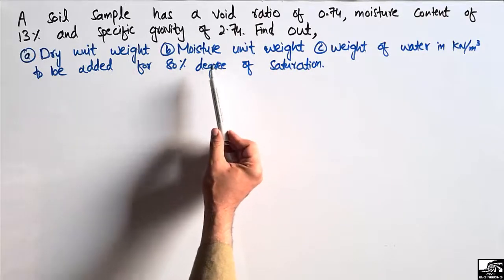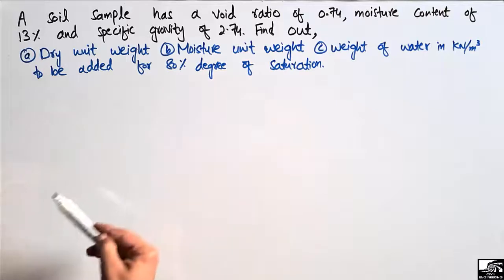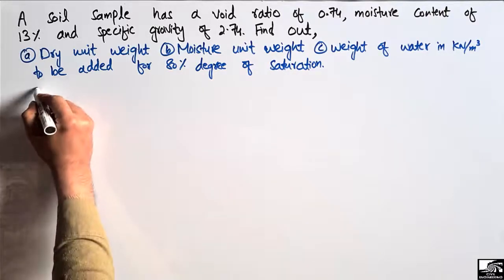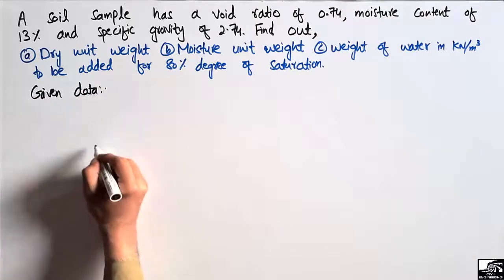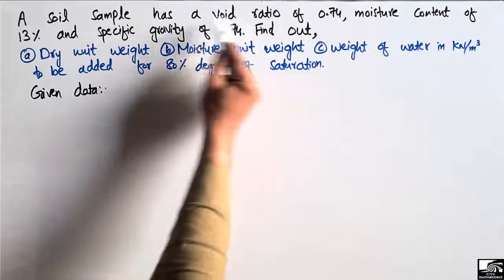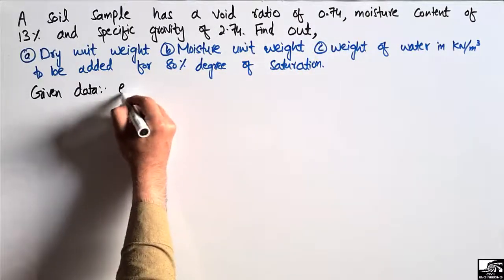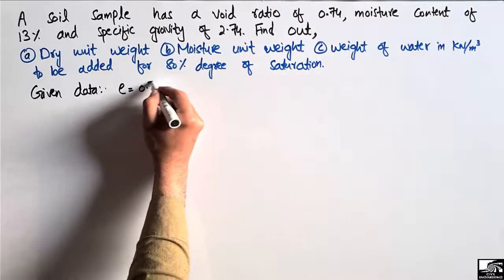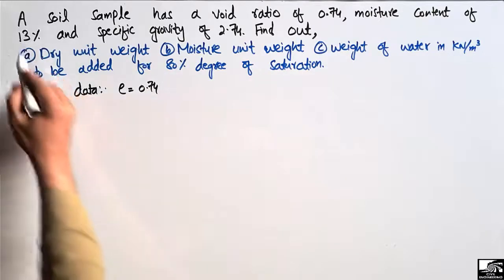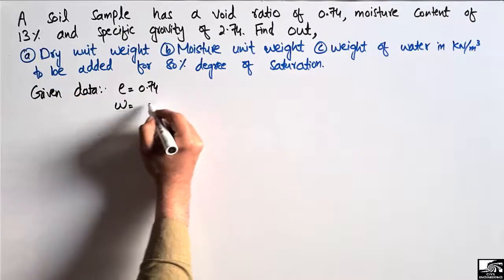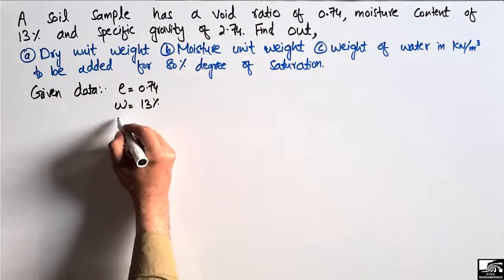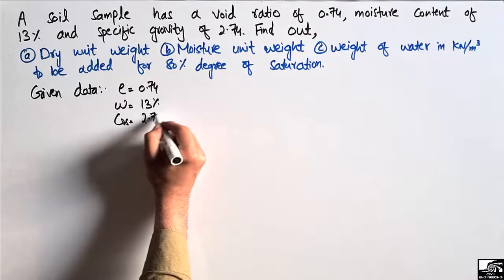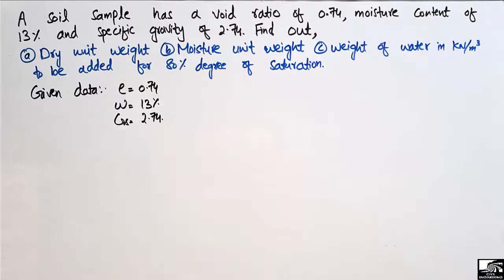These are the three unknown parameters we have to find for this soil sample. The given data are: void ratio e = 0.74, moisture content (water content) w = 13%, and specific gravity Gs = 2.74. First we will find the dry unit weight γD.